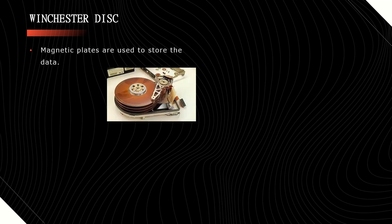Winchester disc. It consists of two or more magnetic plates fixed to a circular block. This can store a large volume of data. These are very fast in reading and writing the data.